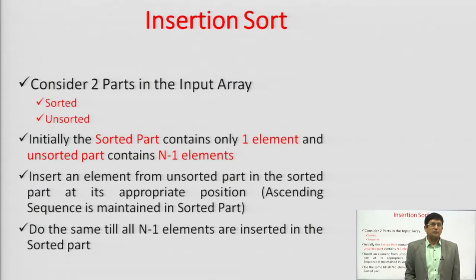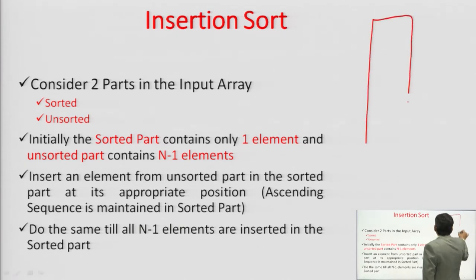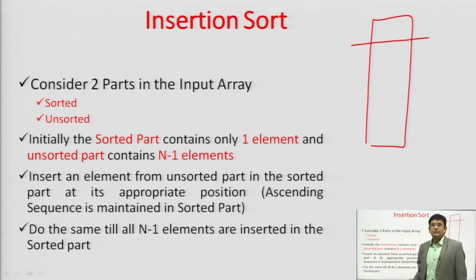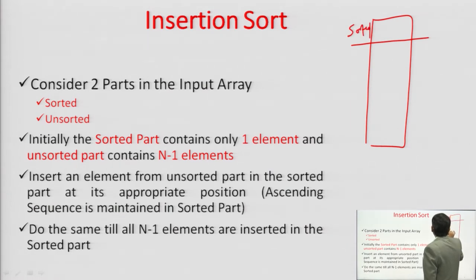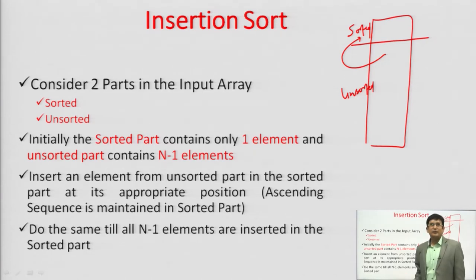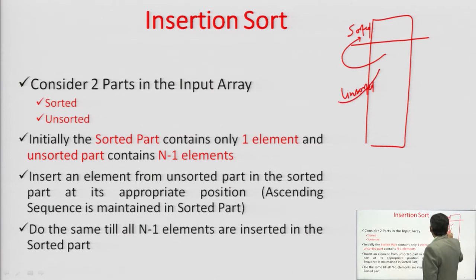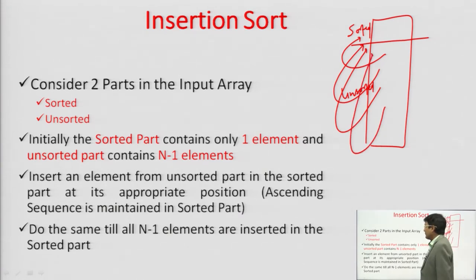Let us understand the insertion sort. In insertion sort, we consider an array containing elements and divide it into two parts. One part contains sorted elements and the other part contains unsorted elements. We pick one element from the unsorted part at a time and insert it into the sorted part. Every time, one element is taken from the unsorted part and inserted into the sorted part, one by one.